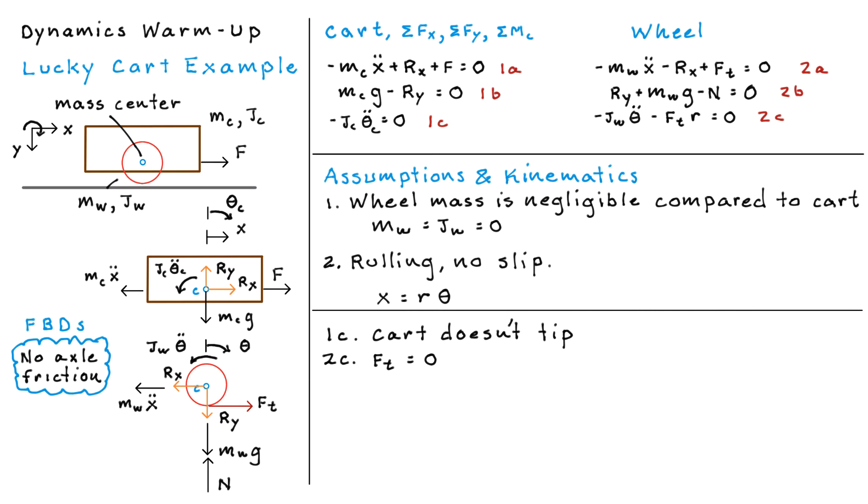And if we look at equation 2A and we start unraveling some of these other goodies, then we can see that because MW is zero and FT is zero, that RX is zero.